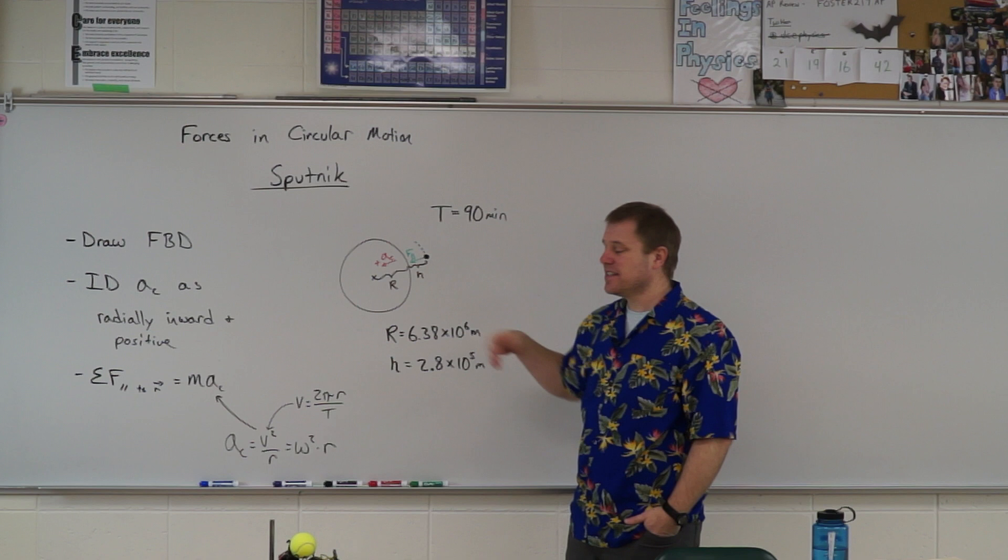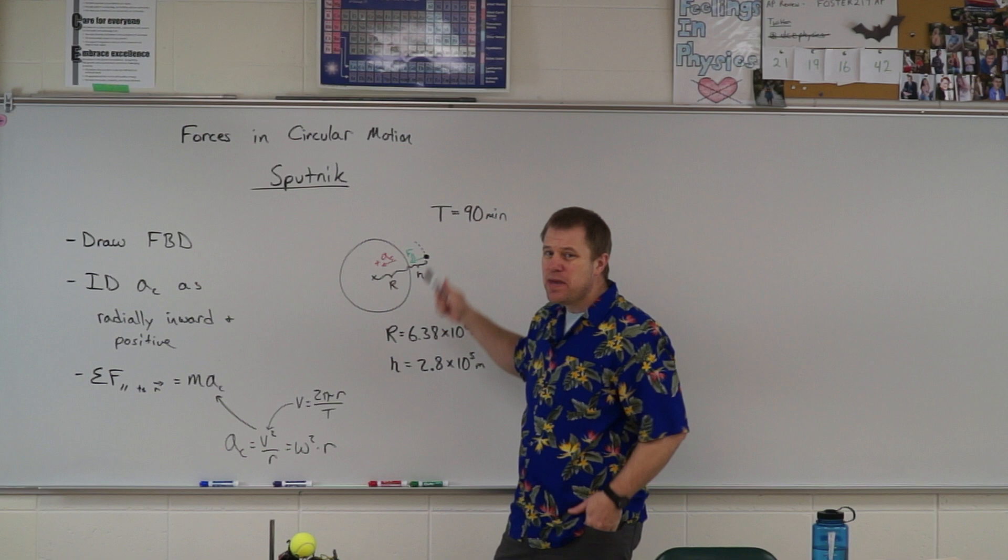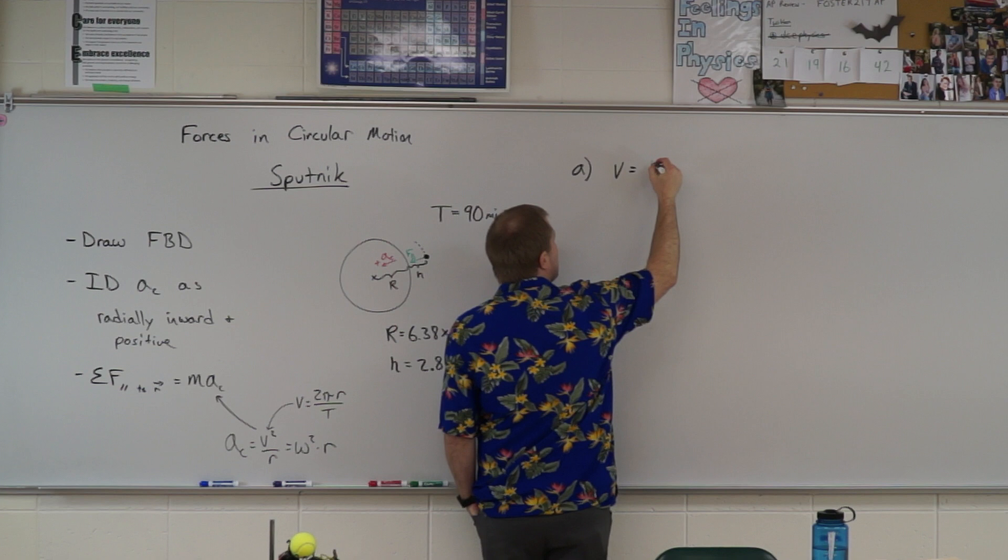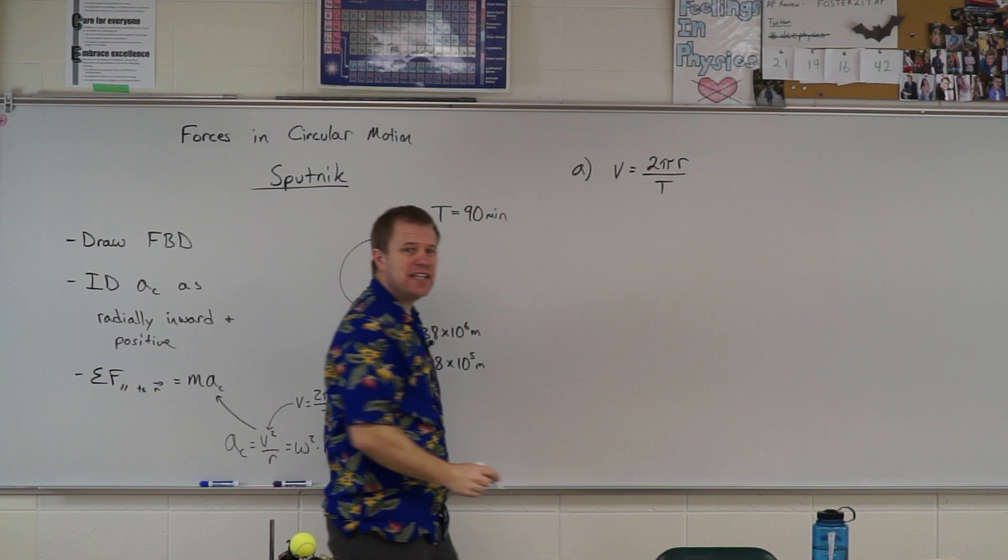So if I think about tangential speed, that's the V, and they gave me the period. So that's telling me that in order to do this, the speed is going to be the circumference, 2 pi r divided by the period. So we need to know what is the r value for that orbit.